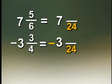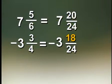4 times 6 is 24. The numerator is 20 in the first fraction, because 5 times 4 is 20. In the second fraction, the numerator is, let's see, what is the numerator? It's 18.